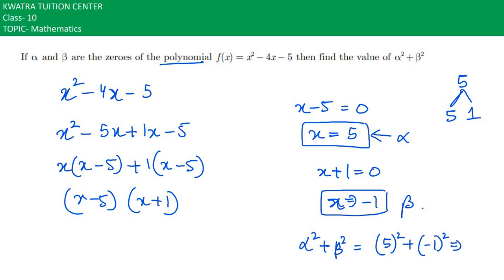So 5 squared becomes 25, and -1 squared is positive 1. So the resultant would be 26. Alpha squared plus beta squared would be equal to 26.